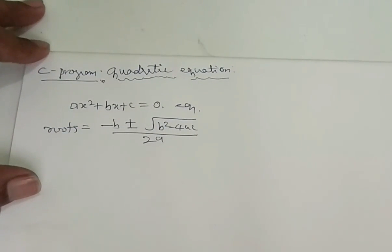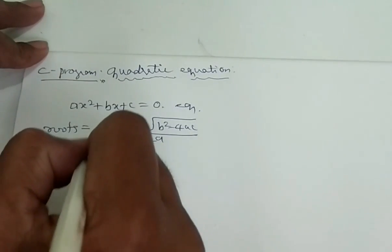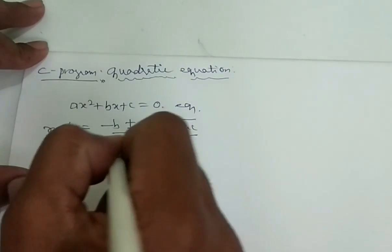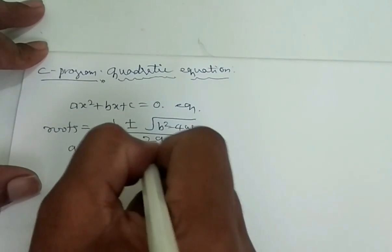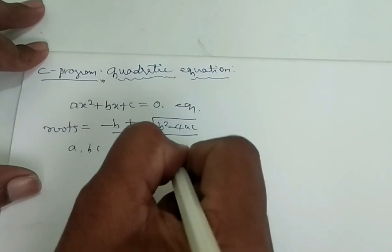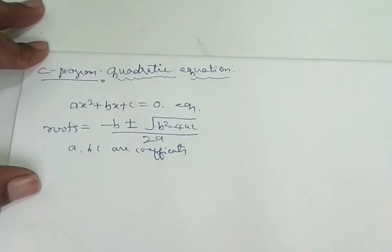If we have this formula, then how can we calculate the roots of this particular equation where A, B, C are the coefficients?